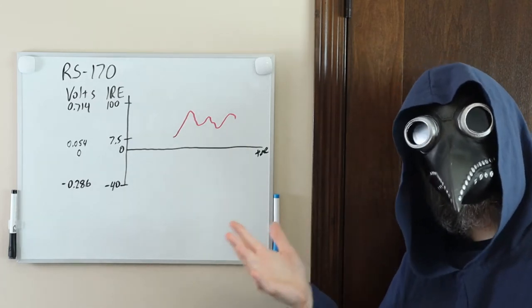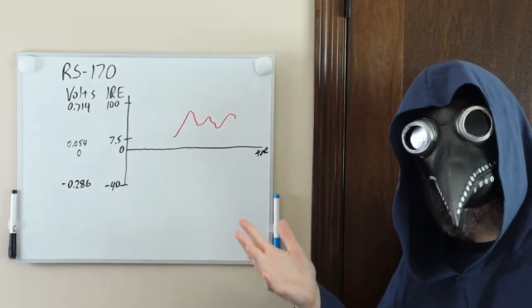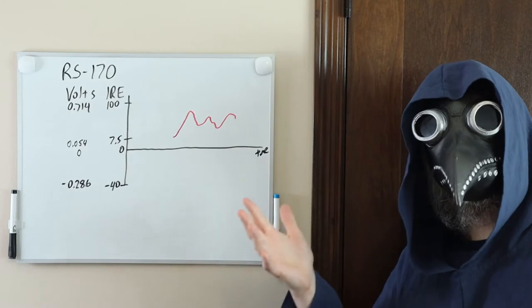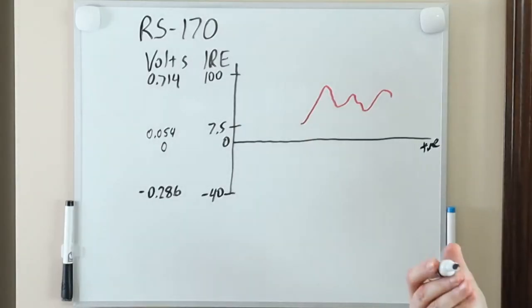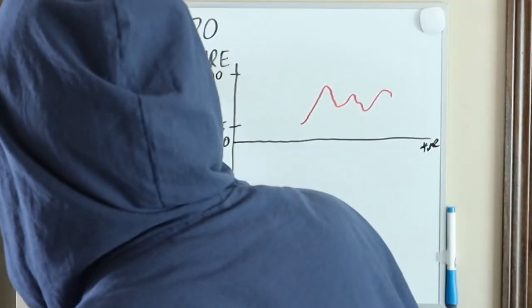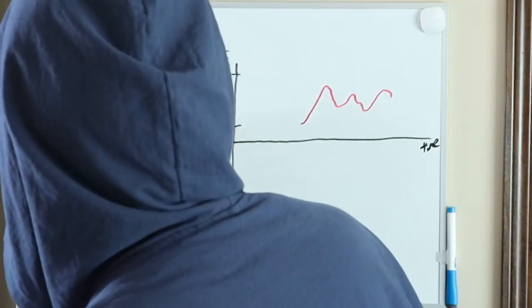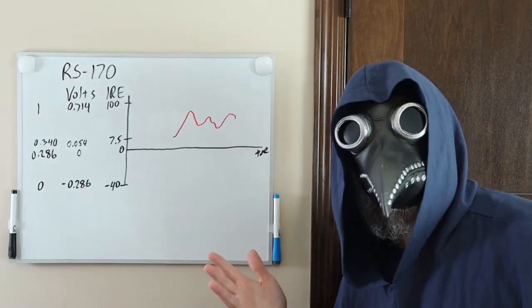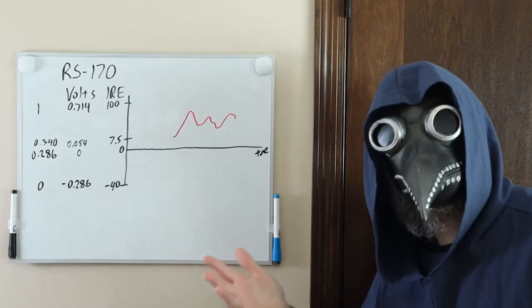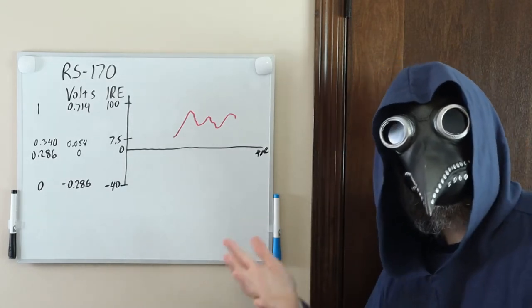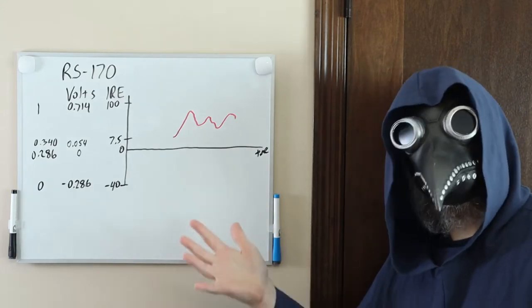Now, just an FYI, most TVs are very forgiving and allow you to shift the signal upwards in voltage so that the whole signal ranges from 0 to 1 volt instead of negative 286 to positive 714 millivolts. This will make it easier if you want to create your own video circuit. Also, most TVs are fairly forgiving with respect to small variances in timing, so you don't have to be 100% dead-on, but try to get as close as you can.